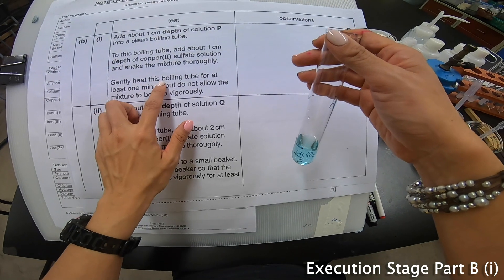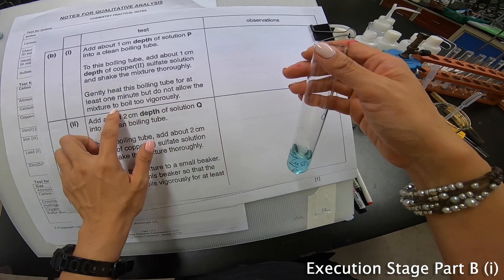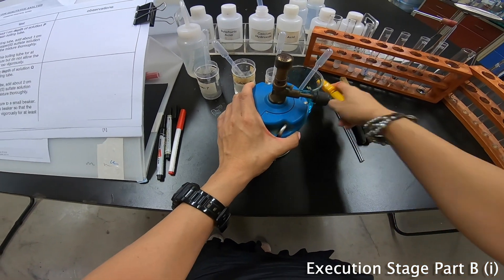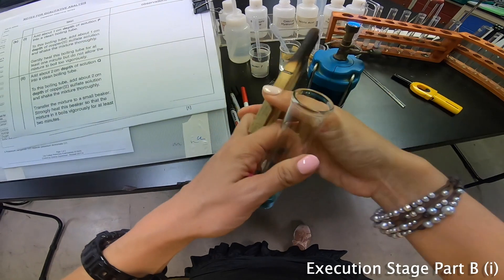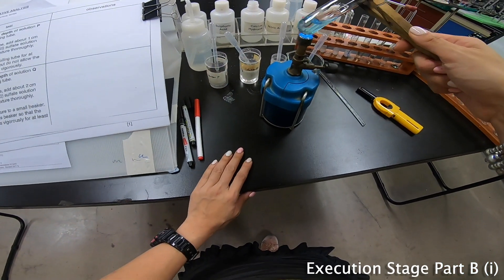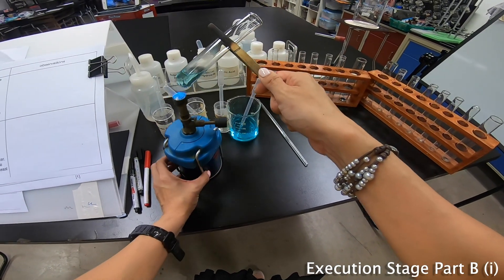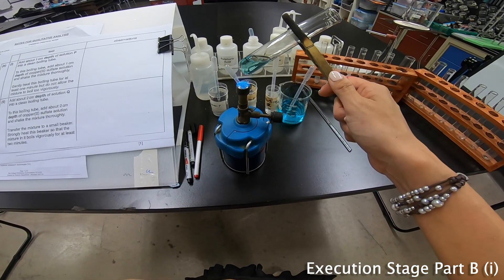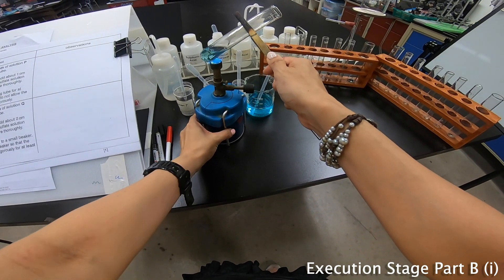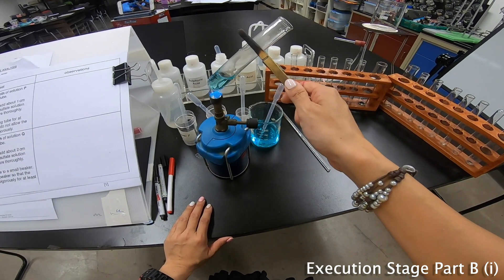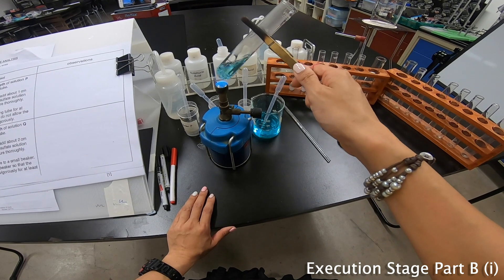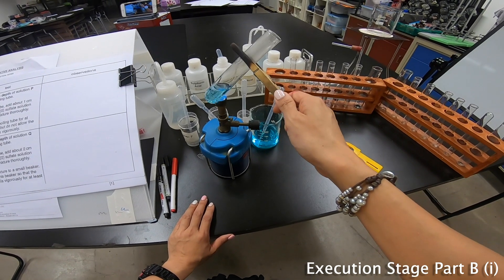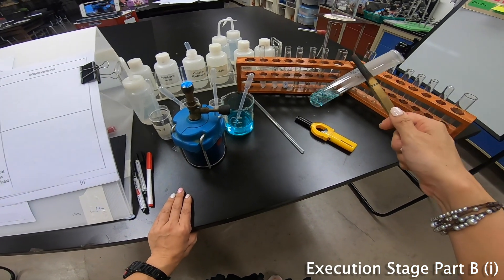Then they say to gently heat this boiling tube for at least 1 minute but do not allow the mixture to boil. So let me turn on the Bunsen burner. Let's put this down here first, set up the Bunsen burner. Heat this for at least about a minute, but do not allow it to boil too vigorously. So let me heat this first. Allow it to boil but not too vigorously, not too vigorously. Let's put it away.